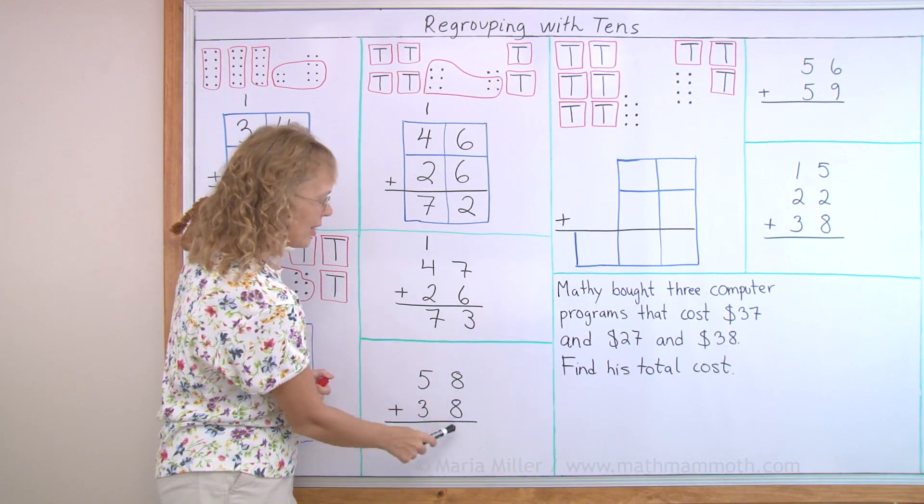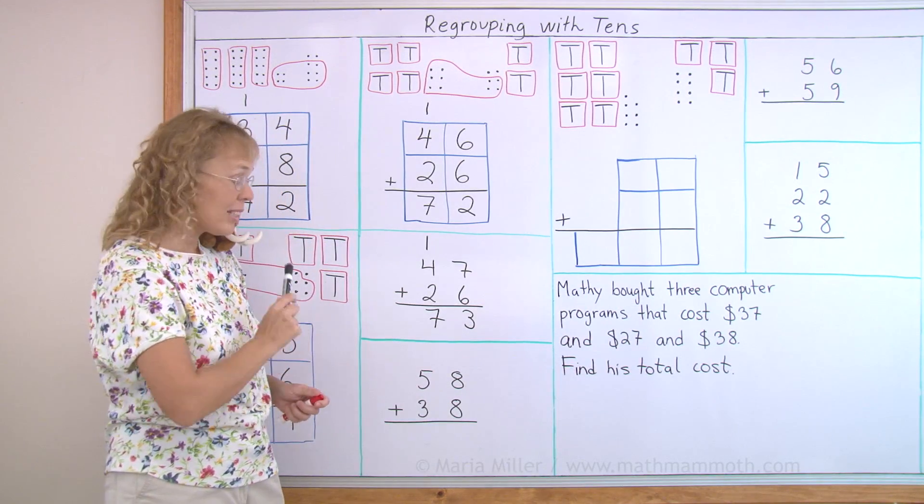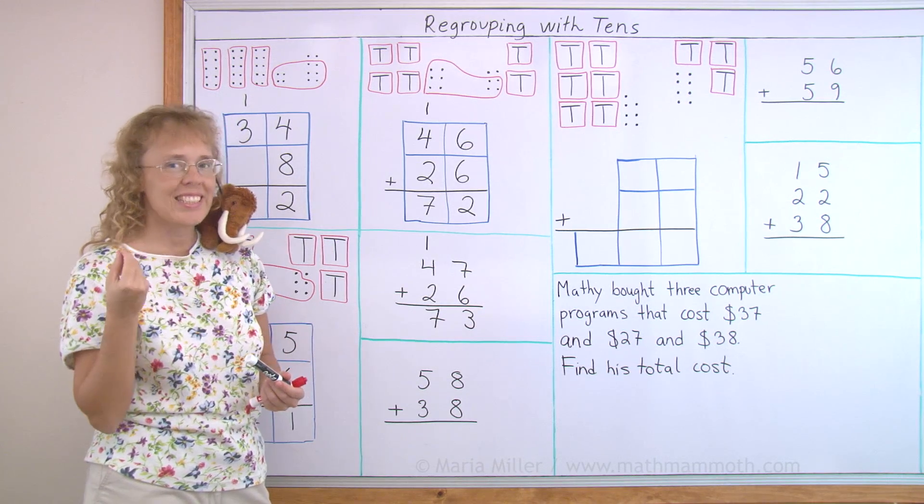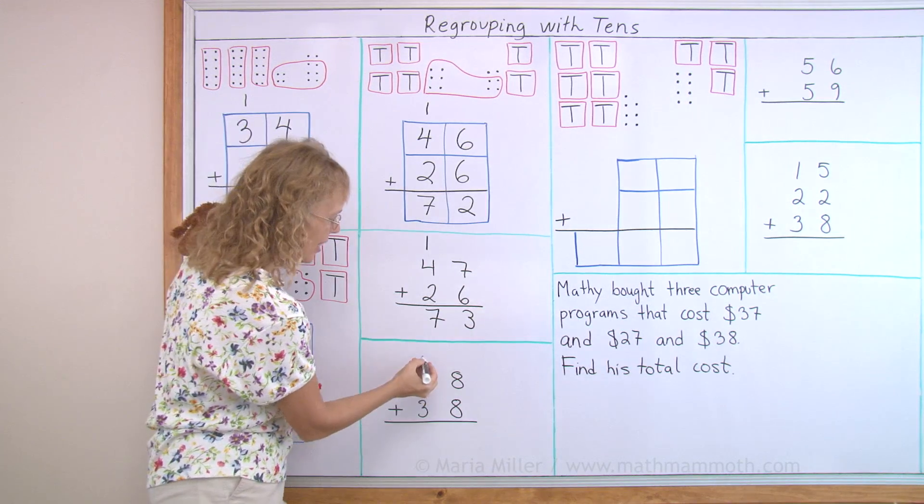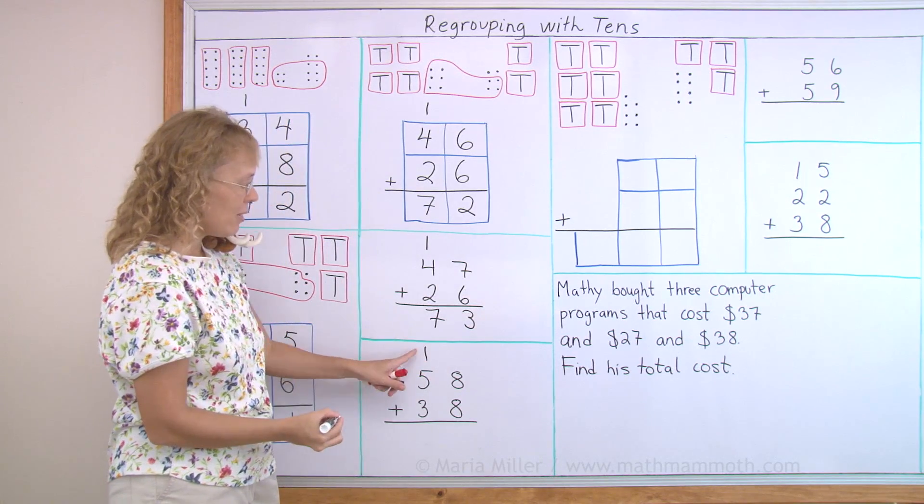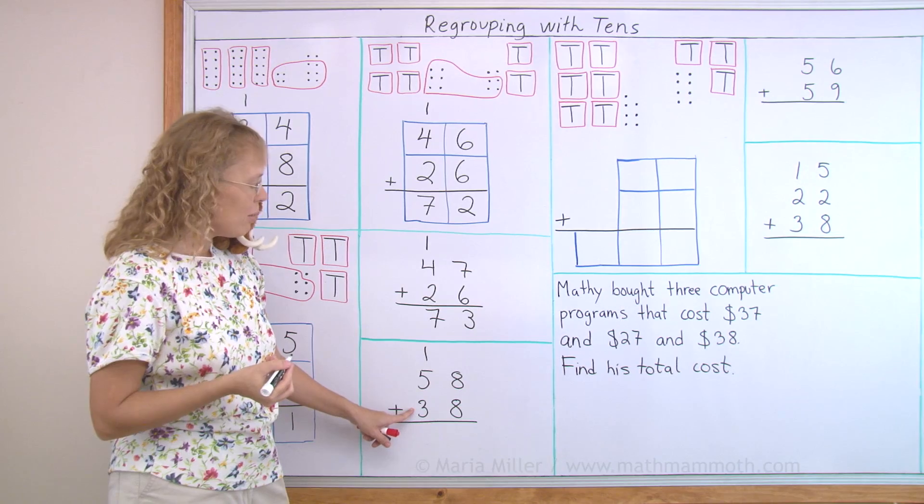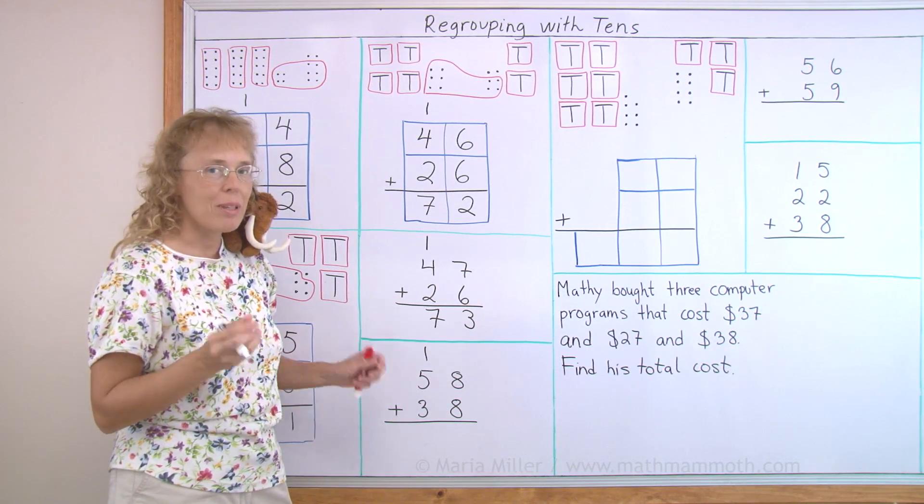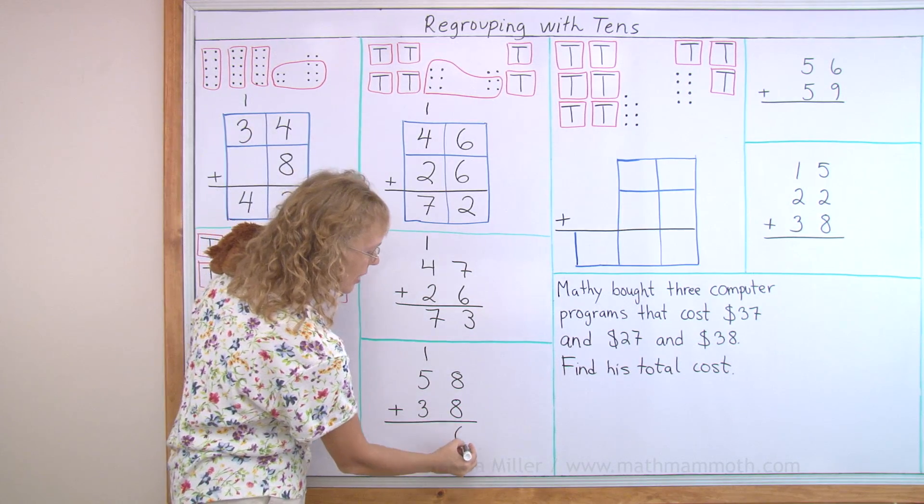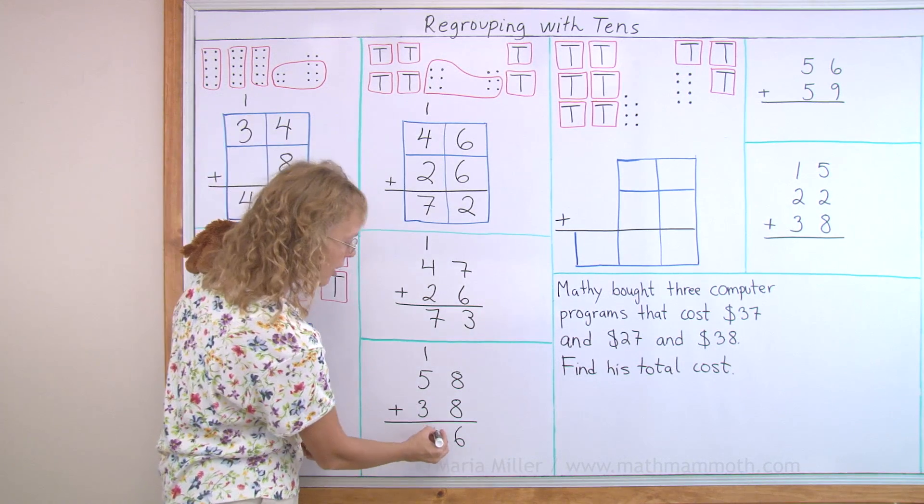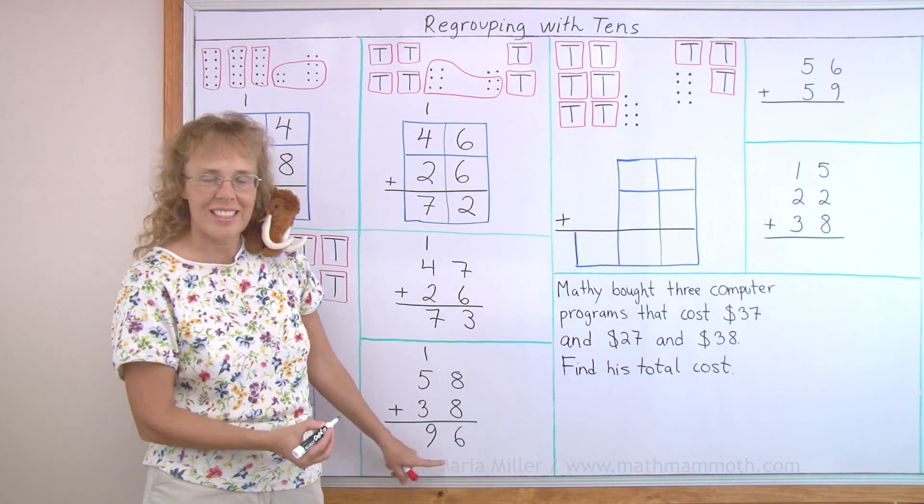Again, here are your ones. Add them first. Eight plus eight equals sixteen. That's one ten and six. So the one ten gets written here with the other tens. That's called regrouping. We group it with the tens, because it became a ten. And then here are the six ones. Then add one plus five plus three, which is nine tens. The answer is ninety-six.